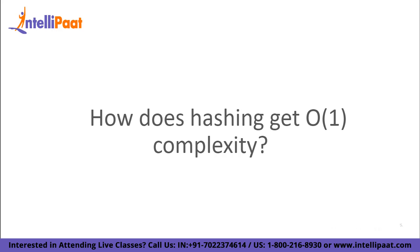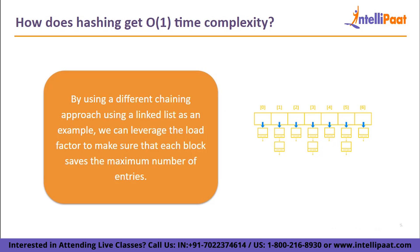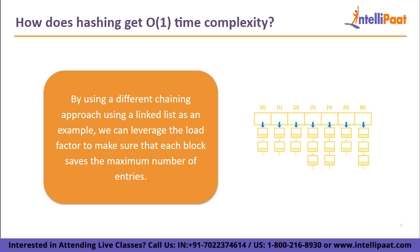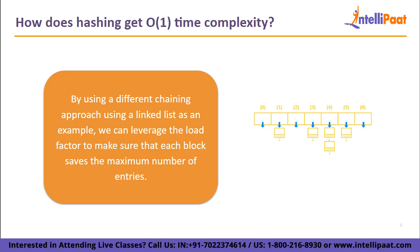Now that we have a clear understanding of this concept, let us understand how hashing gets O(1) complexity. One might ask how hashing might have O(1) if multiple items mapped to the same location. The solution is simple: by using a different chaining approach — using a linked list as an example — we can leverage the load factor to make sure that each block saves the maximum number of entries, which is typically less than the load factor. This load factor is constant in practice, making searching in 10 or 20 components routine. The elements are rehashed using a bigger hash table size if the average number of items in a block is greater than the load factor.